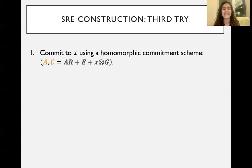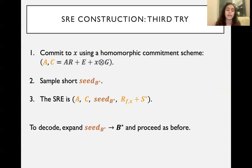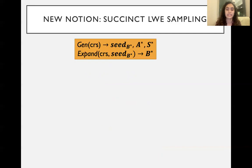Our third try: again committing to x using a homomorphic commitment scheme. Now we're going to sample a short seed for B*. The SRE will be just replacing B* with the short seed. And to decode, we're just going to expand the seed to the full matrix B* and proceed as decoding used to happen. This one, you know, this is really what we want. This is the point of this work. Basically, what we're going to see is this new notion of succinct LWE sampling, where we have two functions, gen and expand. Gen will sample some short seed C_B*, and expand taking the CRS and the seed can give us back B*.